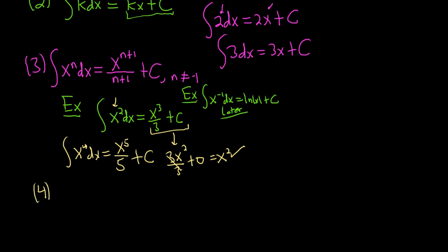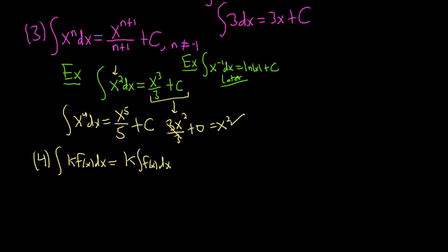The next rule says that if you have a constant times a function, you can pull the constant out. So say you have k f of x dx, and that's equal to k integral f of x dx. So you're allowed to pull constants out. Let's do an example of this, and we'll do the same example two different ways, just to illustrate a very key point.